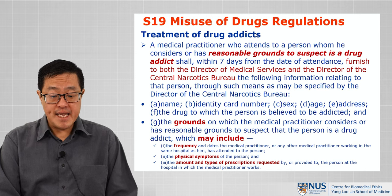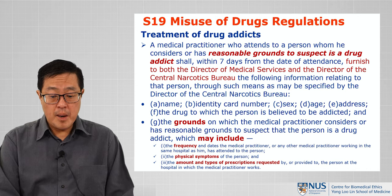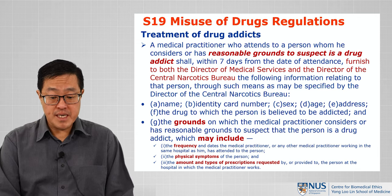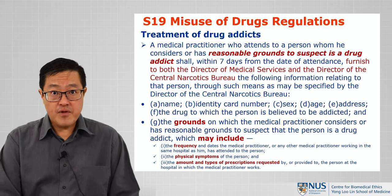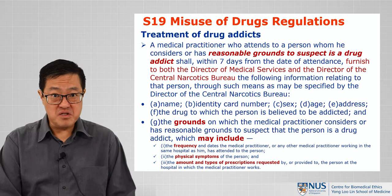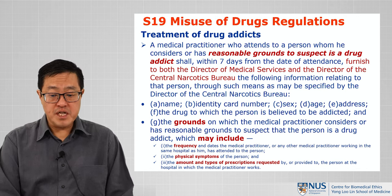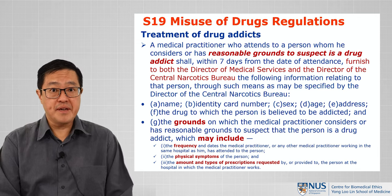The medical practitioner shall within seven days from the date of attendance furnish to both the Director of Medical Services and the Director of the Central Narcotics Bureau the required information. Grounds may include the frequency and dates the medical practitioner or any other medical practitioner working in the same hospital has attended to the person, the physical symptoms of the person, and the amount and types of prescriptions requested by or provided to the person. For example, someone who comes in requesting large quantities of cough syrup every week — that would constitute grounds for suspicion and a context in which we would want to be reporting that person.